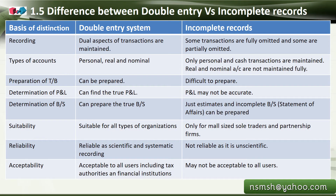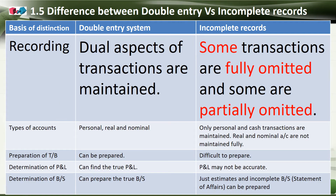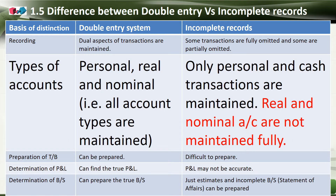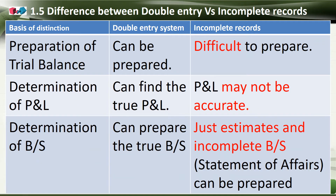The difference between the double-entry system versus incomplete records. Based on the basis of distinction, in the double-entry system, dual aspects of transactions are maintained, whereas in incomplete records, some transactions are fully omitted and some are partially omitted. Regarding types of accounts: in the double-entry system, all account types are maintained — personal, real, and nominal — whereas in incomplete records, only personal and cash transactions are maintained; real and nominal accounts are not maintained.